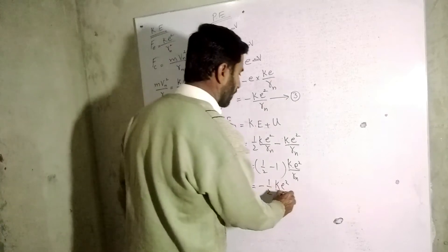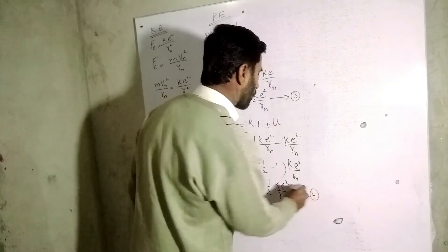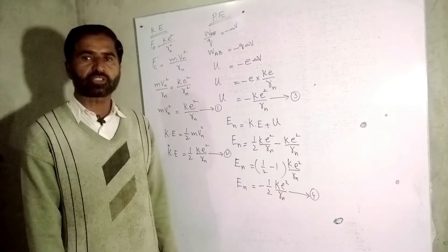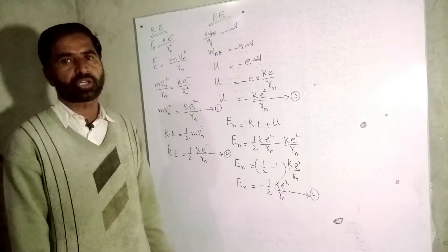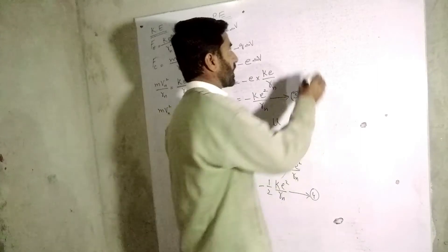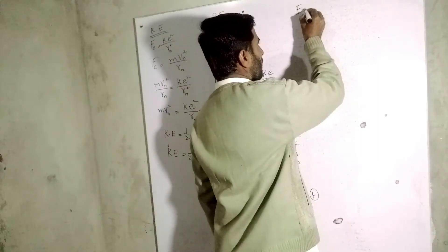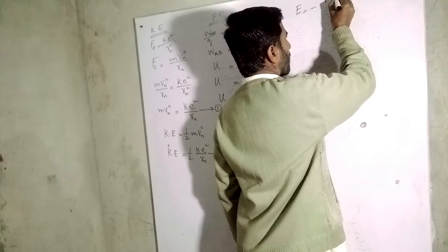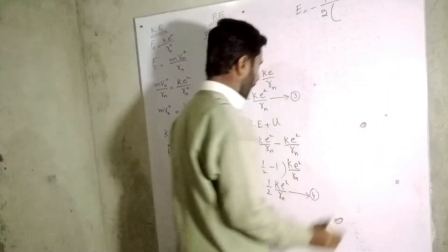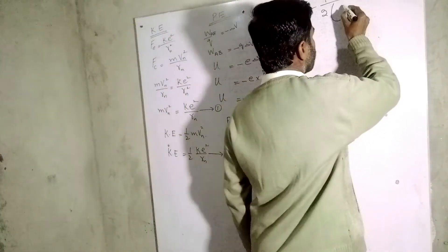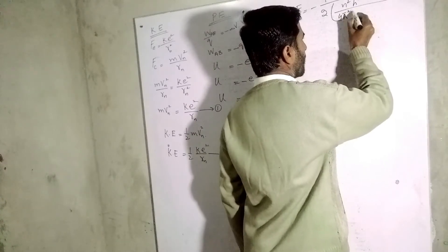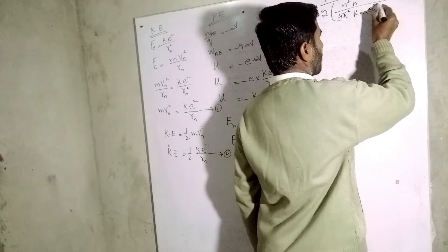This is equation number 4. Now we substitute the value of rn, which we calculated from the quantized radii in the Niels Bohr atomic model. Substituting rn, equation 4 becomes: En = −ke² over 2 × (n²h² over 4π²kme²).